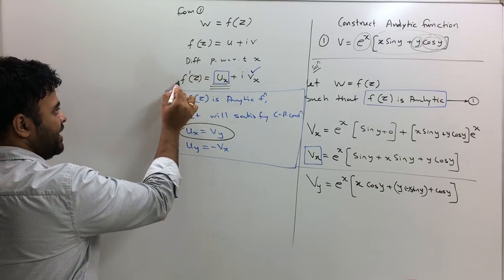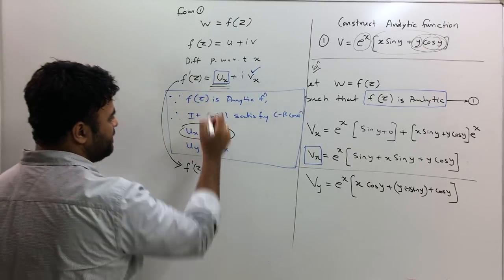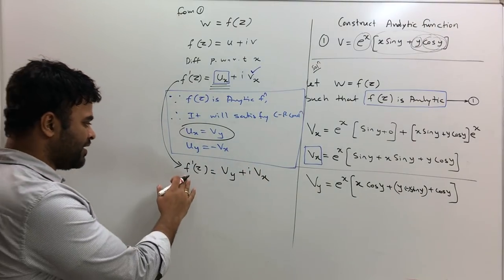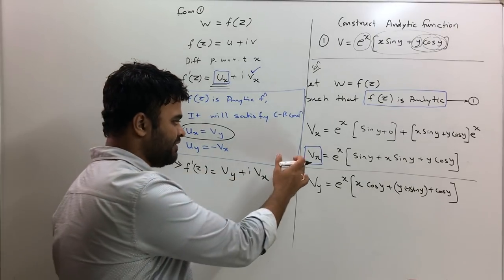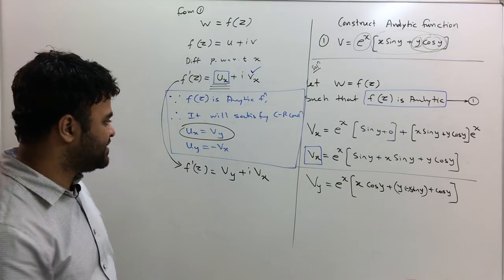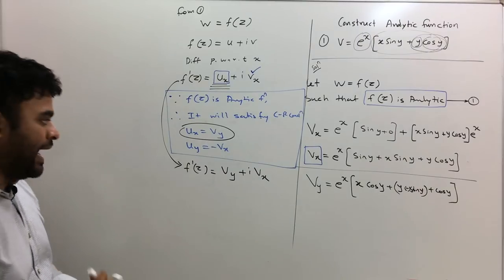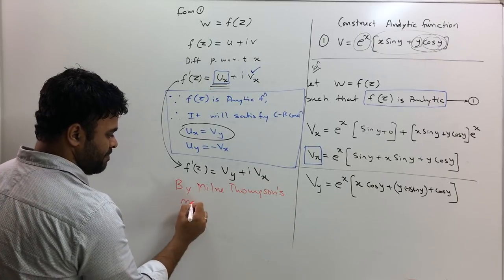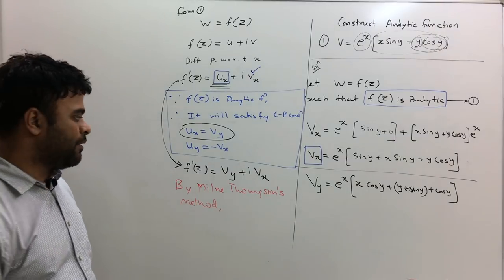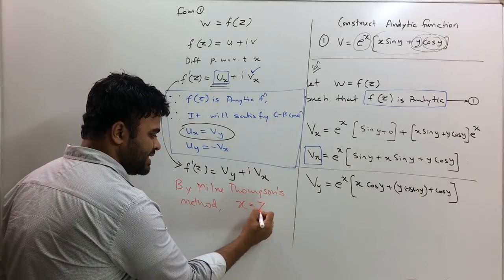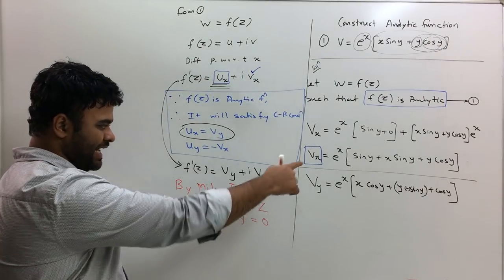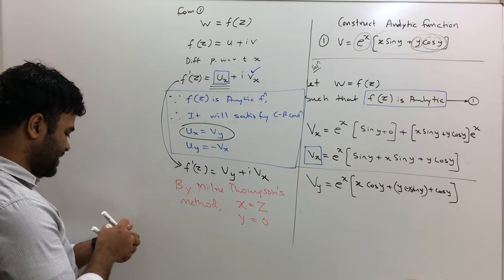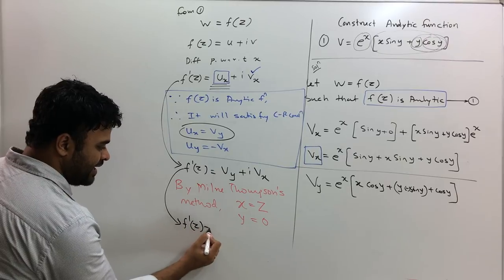Replacing Ux with Vy, we get f'(z) = Vy + i·Vx. The best part is we already have both values — Vx and Vy are known. Now we apply the Milne-Thomson method, which says: replace x by z and replace y by 0 in these functions to find the analytic function.